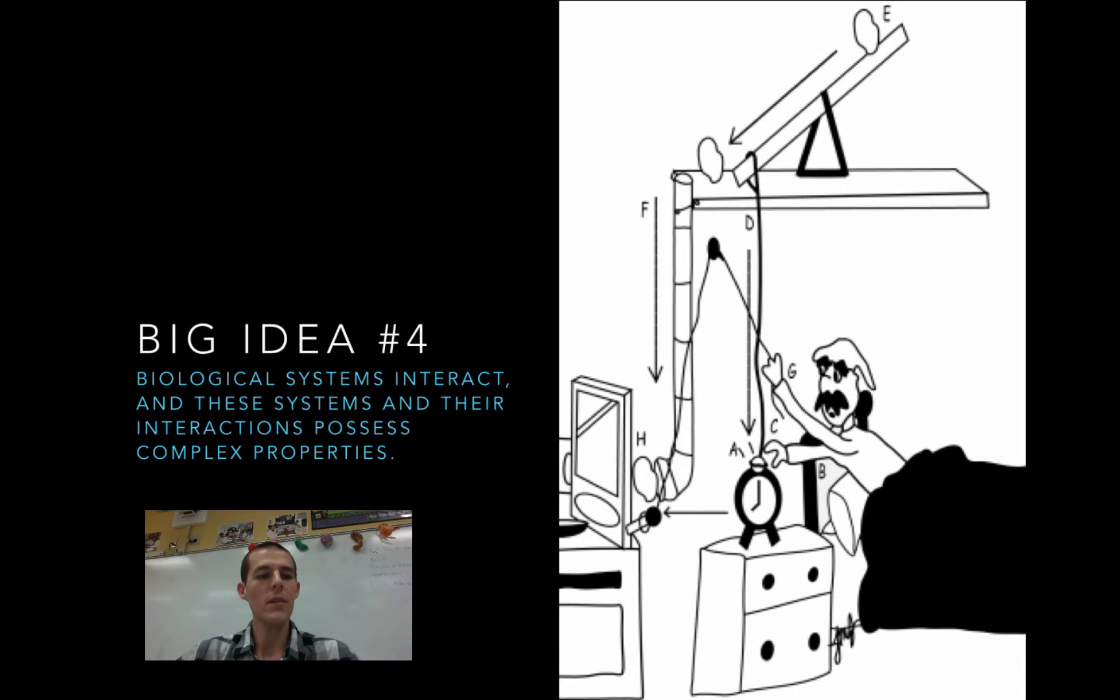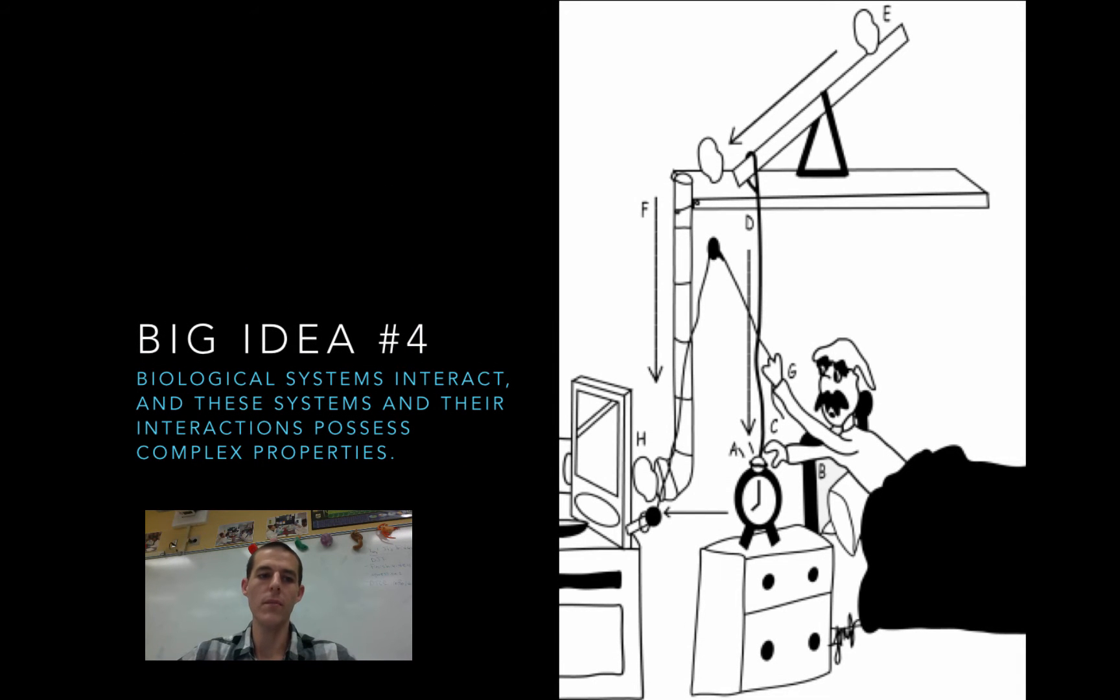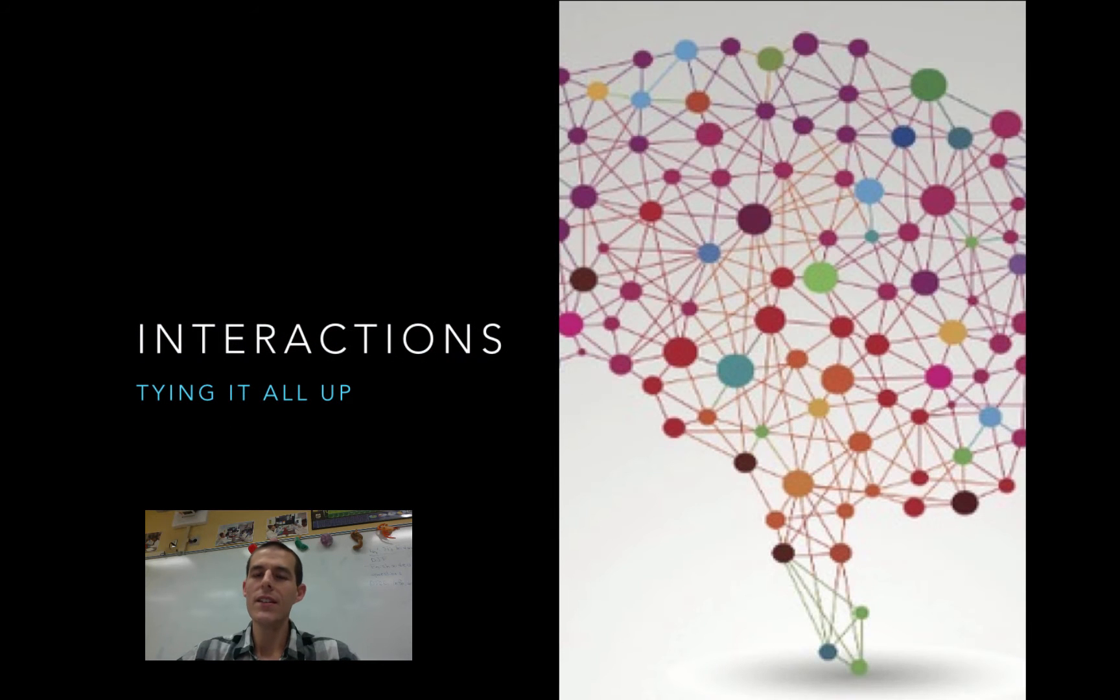This last Big Idea, number 4, is that biological systems interact and that these systems and their interactions possess complex properties. So, what does that mean? This last Big Idea is going to be all about tying together the things that we have been learning all year long.